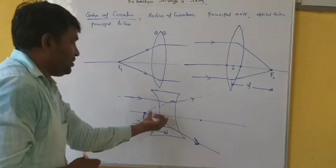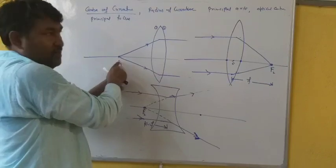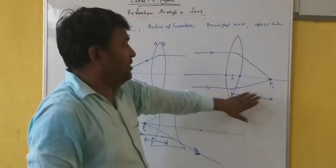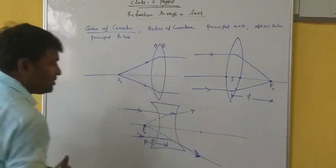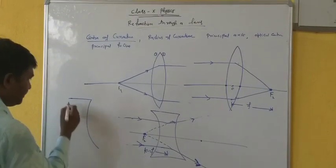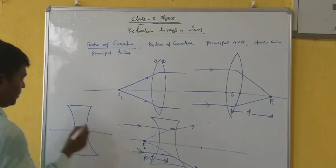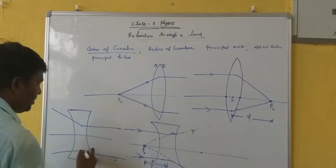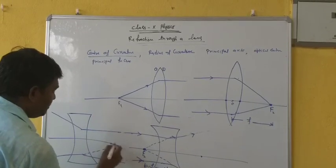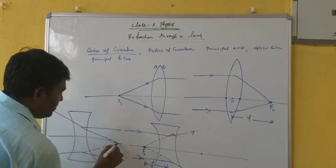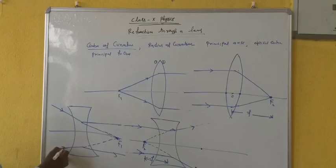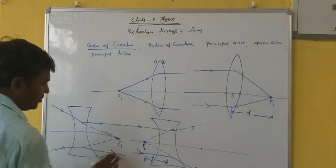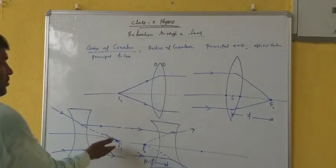In the convex lens, the first focus is on the left side and the second focus is on the right side — positive. The focal length is defined for the second focus. For a concave lens, the first focus: suppose light rays are coming like this and after refraction they are going to become parallel — they are just appearing to come from this point. So this is your first focus.